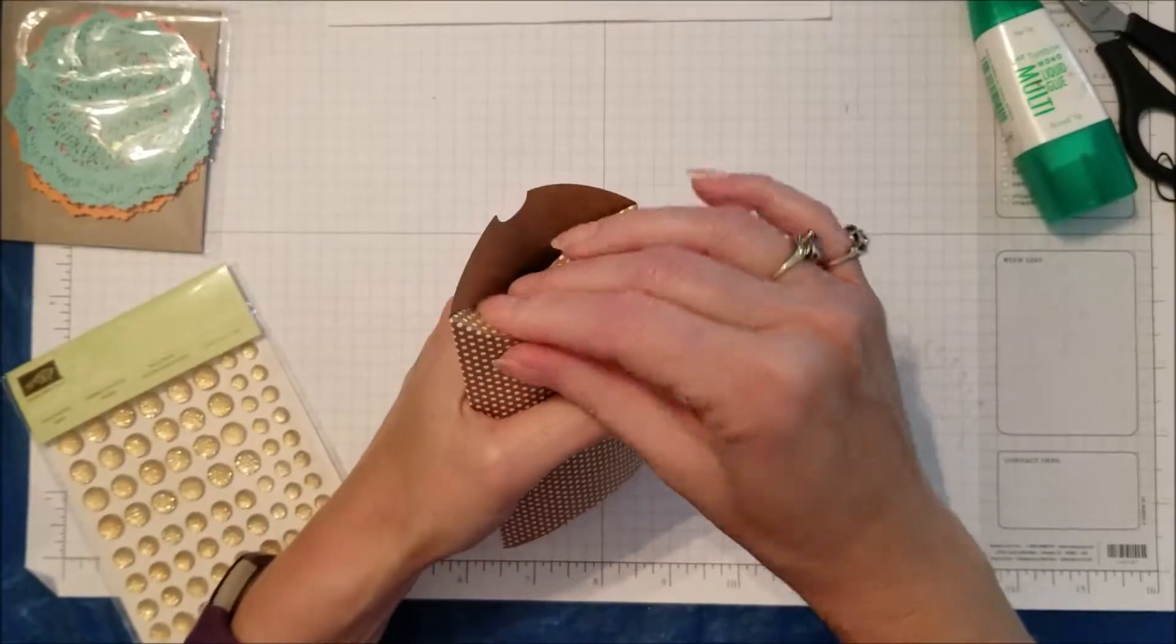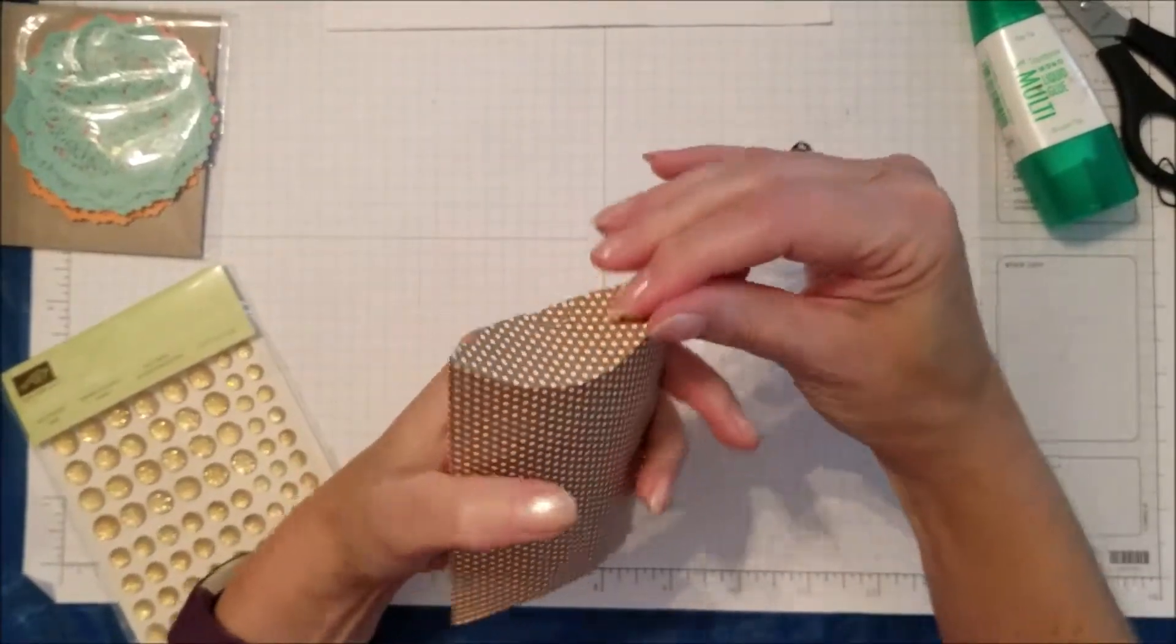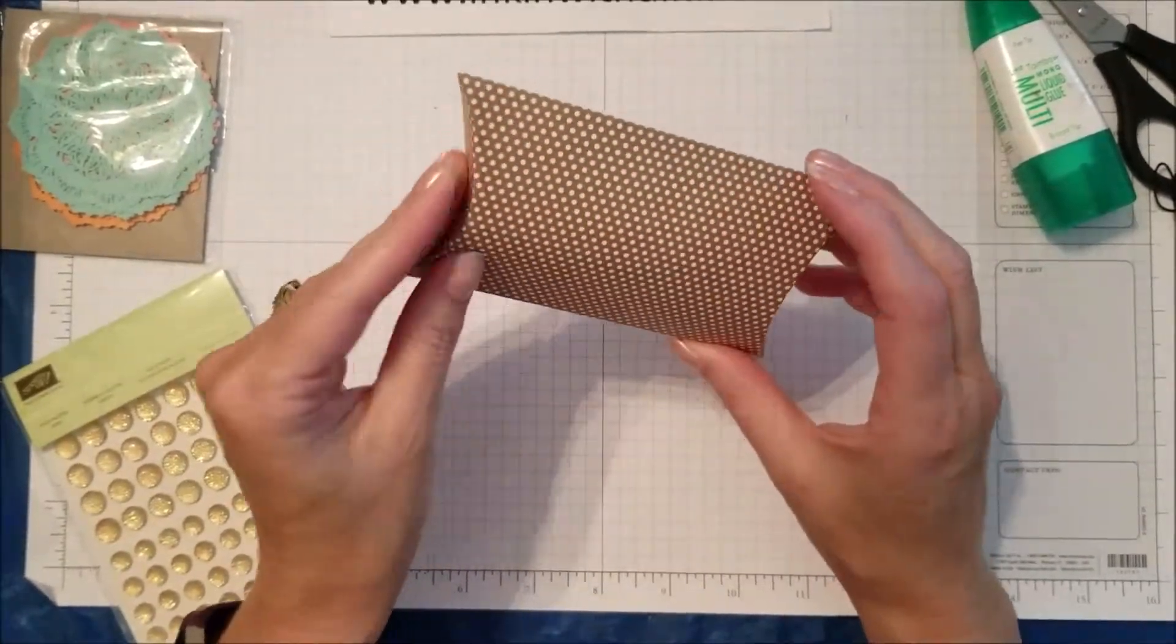Flip it over, do the same thing again. The side with the notch is always on top only because it makes it easier for you to get open when you're ready to open it.